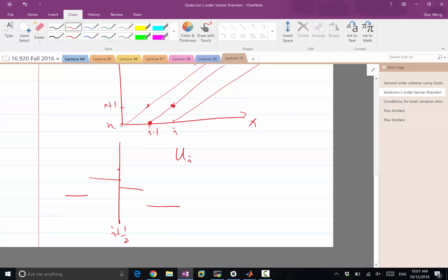So u of i plus half left is equal to a nonlinear function, has to be equal to a nonlinear function of ui and ui minus 1. And u of i plus half right has to be a nonlinear function of ui plus 1 and ui plus 2.